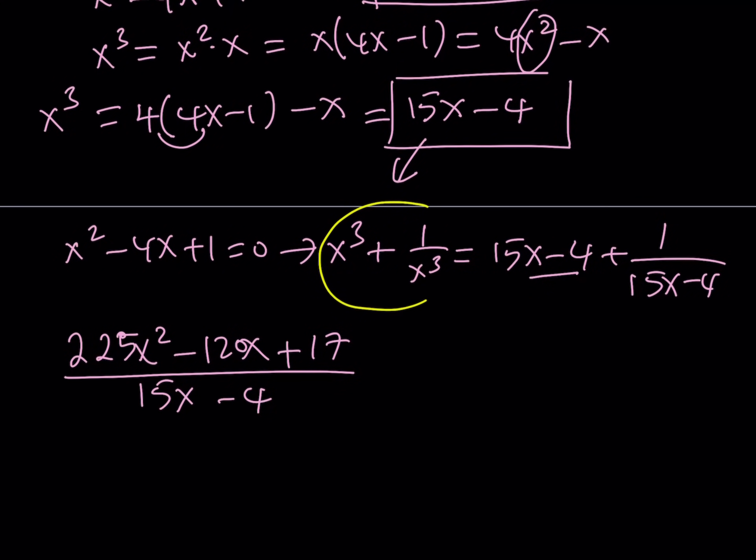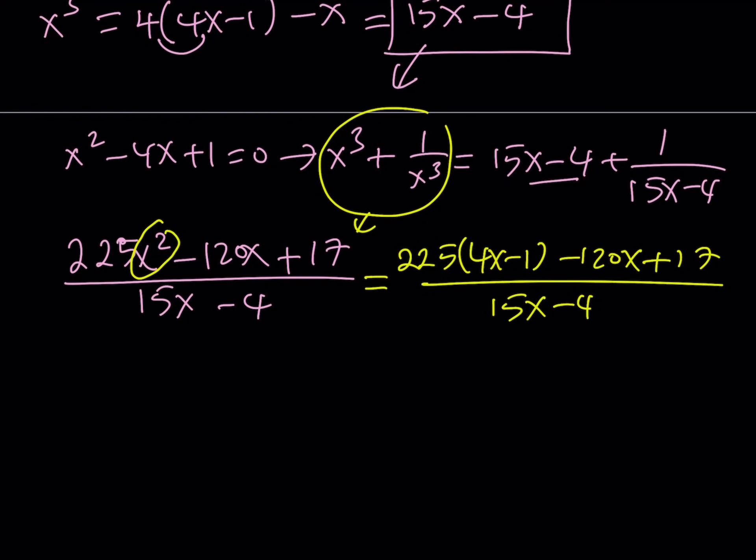This is what I'm evaluating, basically, at this point. And then of course you can replace x squared with 4x minus 1 again. And that's going to give you 225 times 4x minus 1, and then minus 120x plus 17, divided by 15x minus 4. When you distribute this, you're going to get 900x. Subtract 120, you're going to get 780x, minus 225 plus 17. That's going to give you negative 208 divided by 15x minus 4.